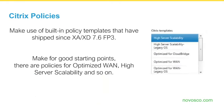Citrix has a couple of built-in policy templates available since XenApp and XenDesktop 7.6 Feature Pack 3. High Server Scalability and Optimized for WAN are two examples. These are great starting points — if you depend on good WAN performance, start with the Optimized for WAN template, which includes policies based on Citrix's recommendations. You can further tweak the template to your liking. These are good building blocks for your policies.